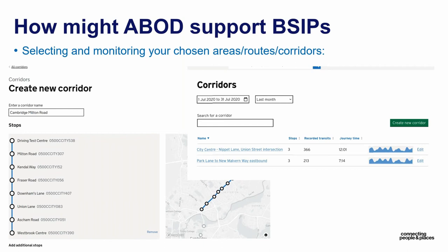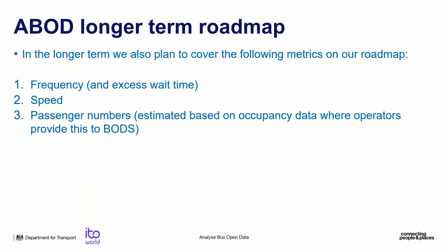You can select, create and save these corridors as mentioned. Looking further into the longer term roadmap: frequency is the next metric to be covered, looking at excess wait time. After that, we can use GPS coordinates for more granular speed views within the service. Then we could look at doing something with passenger numbers based on any occupancy data being provided. Those are on a longer-term roadmap, not fully scoped yet, but if you have any feedback or suggestions on how those might be best covered, we're really open to hearing them.